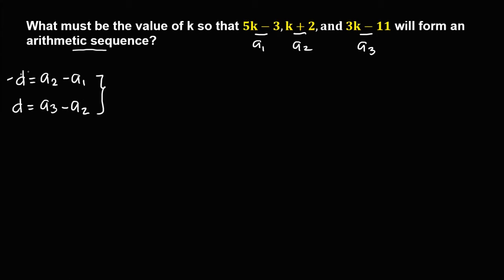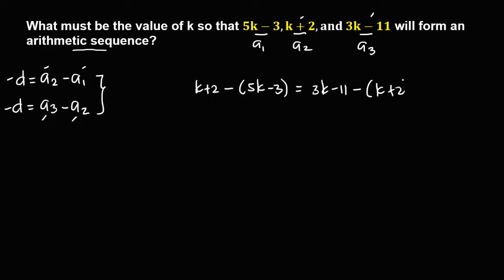For the first common difference, we have a sub 2 minus a sub 1: that's k plus 2, minus 5k minus 3. Then equals the second formula for the common difference, a sub 3 minus a sub 2: so 3k minus 11, then minus a sub 2, that's k plus 2.